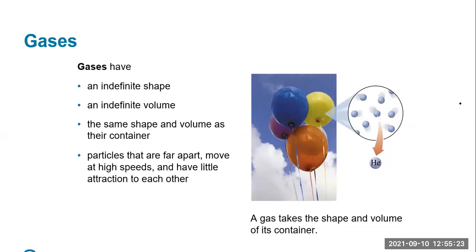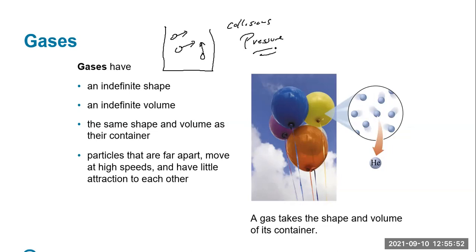Gases have an indefinite shape and an indefinite volume, and they do take the shape and volume of their container — they fill it uniformly. In the gas state, all the particles are broken apart and flying around. Collisions between particles are what we associate with pressure. One idea about gases is that we think about the gas's volume as the volume of the container, because they are constantly flying around colliding — they represent the entire volume of the container they're in.